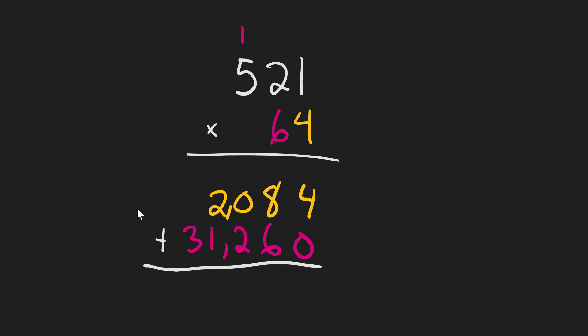And finally, 2,084 plus 31,260 is 33,344.